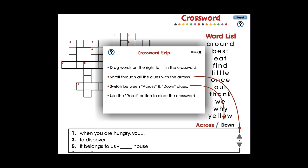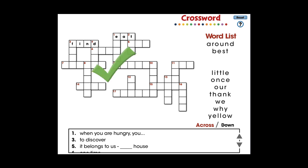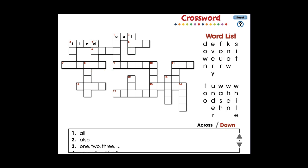In this crossword activity, 21 Dolch sight words are provided with across and down clues. For elementary school, this mini is great for comprehending all the Dolch sight words centered around the topic of high-frequency sight words.